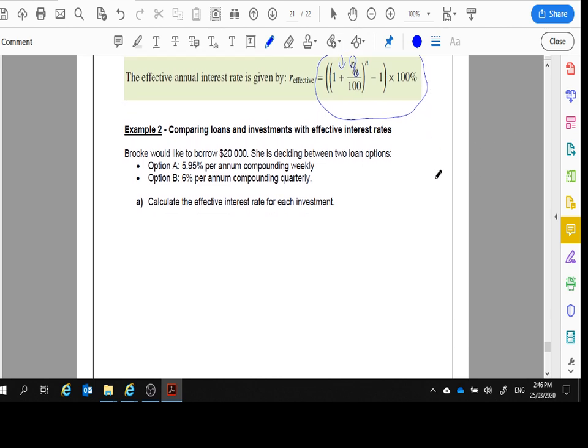Brooke would like to borrow $20,000. She is deciding between two loan options. Option A: 5.95% per annum compounding weekly. And Option B: 6% per annum compounding quarterly. Calculate the effective interest rate for each investment. So we'll do Option A over here.